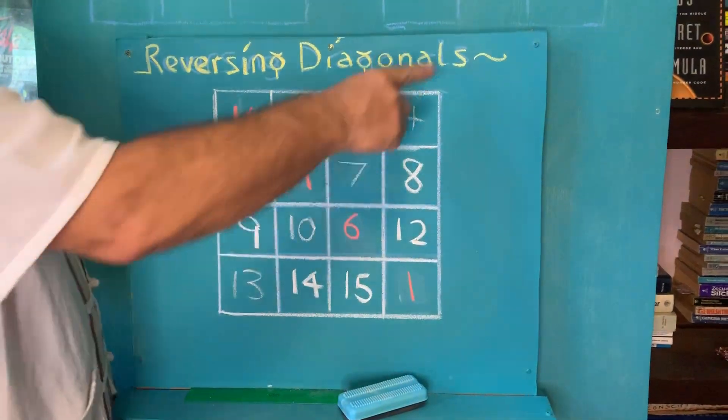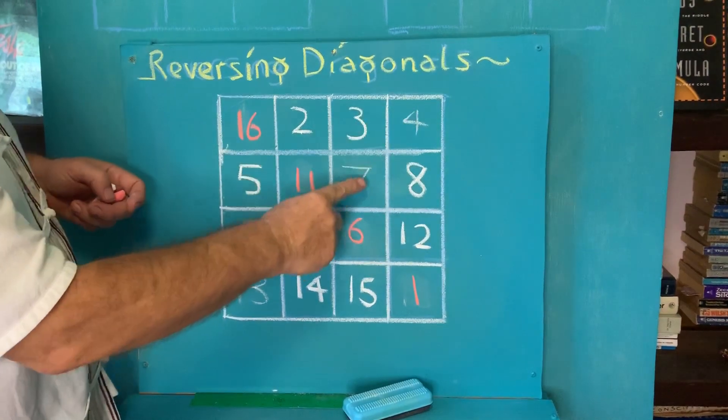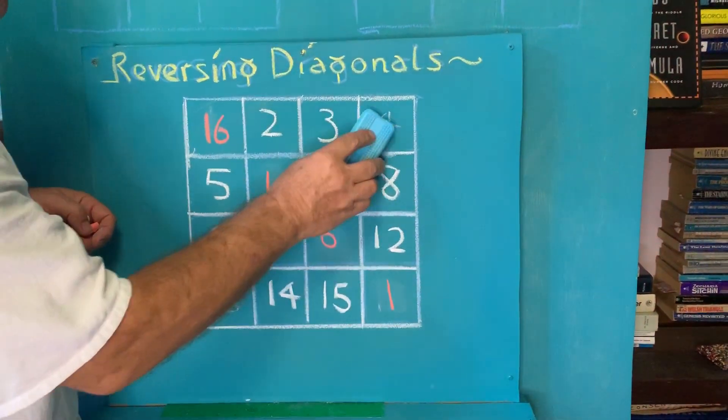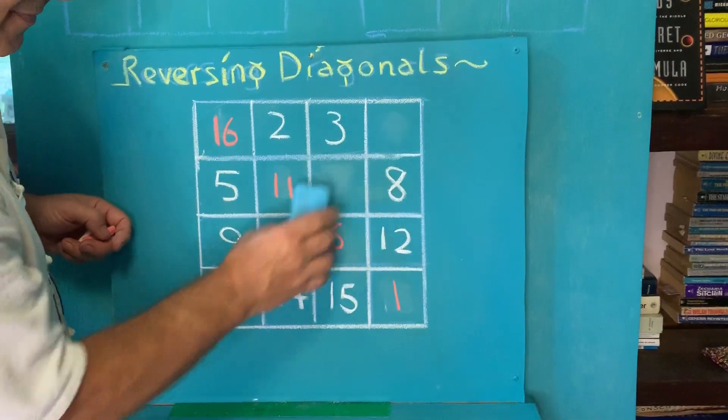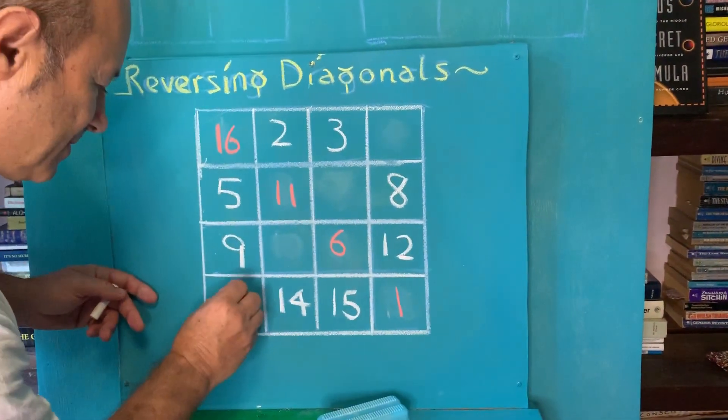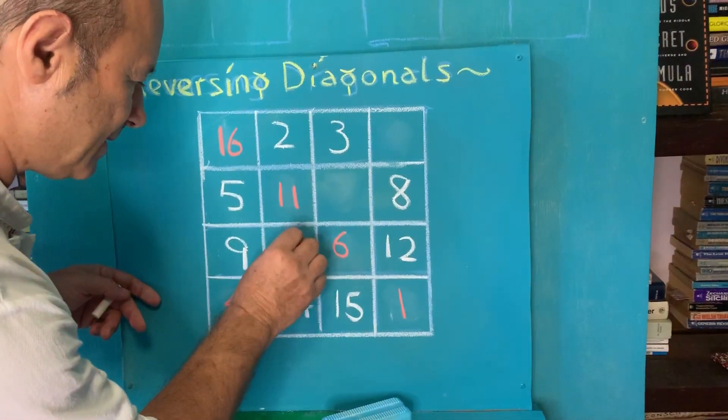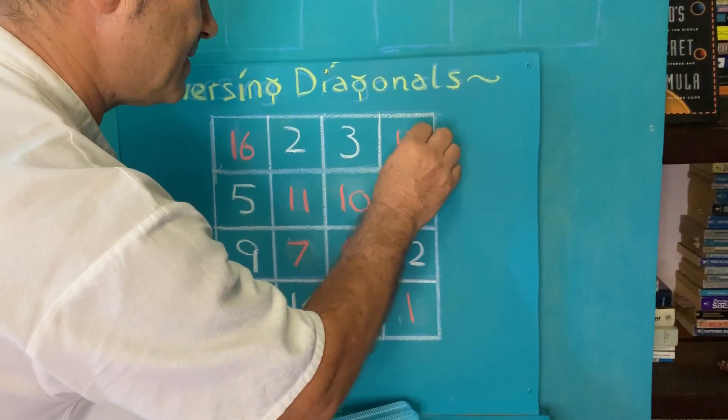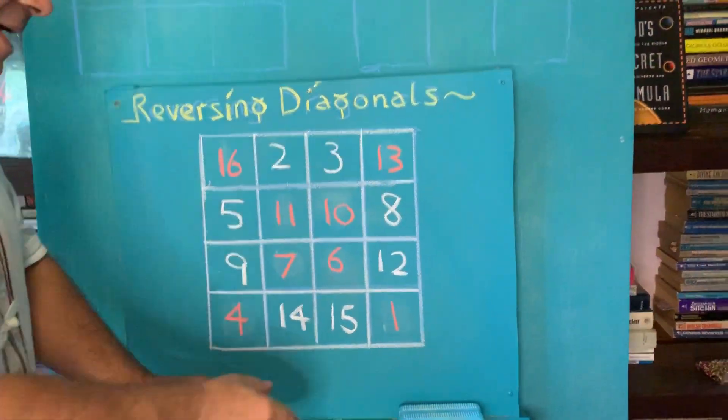Now we take a mental note of the other diagonal: 4, 7, 10, 13. I'm going to rub them out and write it in reverse: 13, 10, 7, 4. So suddenly, voila, we have what we call a magic square.